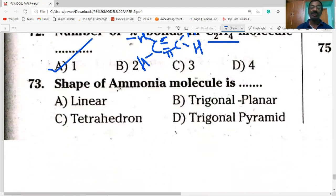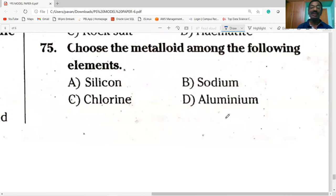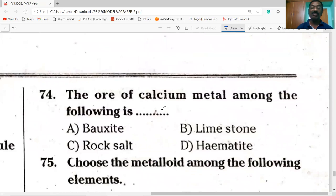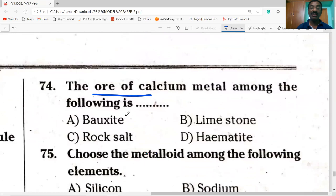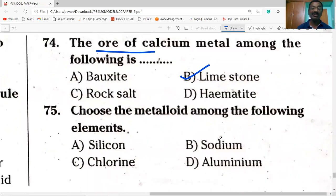The shape of the ammonia molecule is trigonal pyramidal. BeCl2 is linear molecule. BF3 is trigonal planar. CH4 molecule is tetrahedral. Next question: which ore is of calcium metal? Limestone is the ore of calcium. Rock salt is sodium chloride. Haematite is iron ore. Option B is correct.